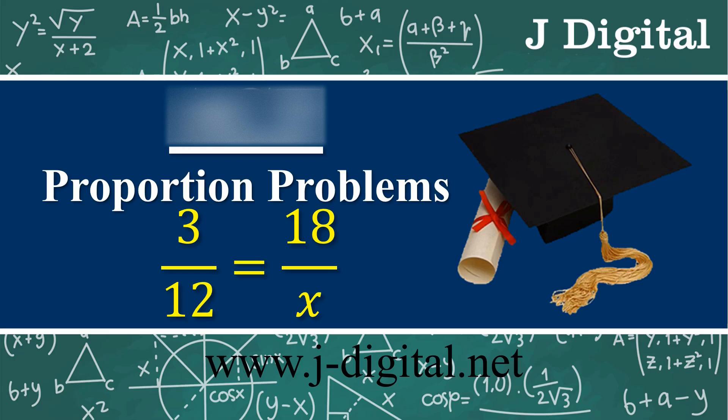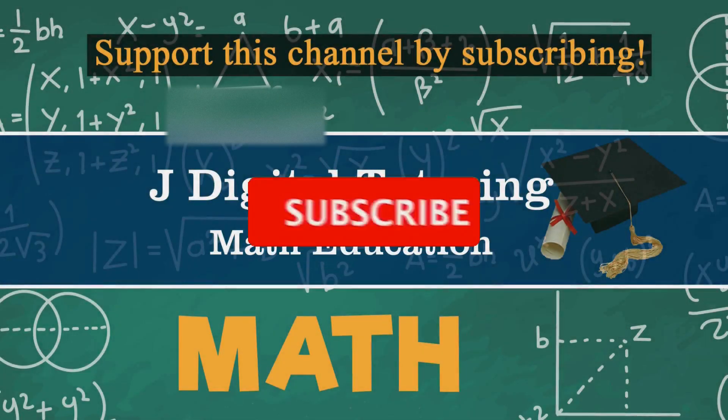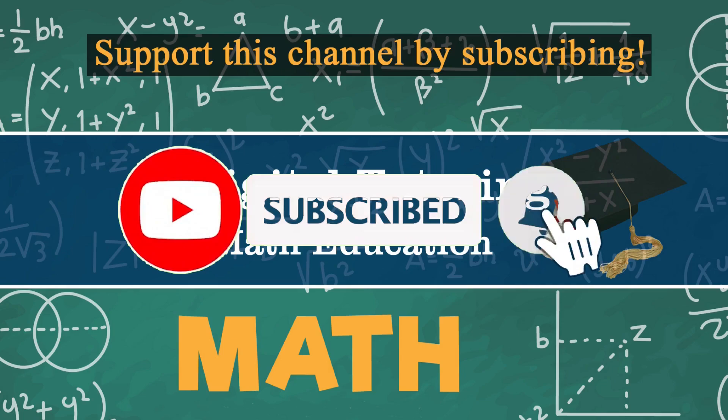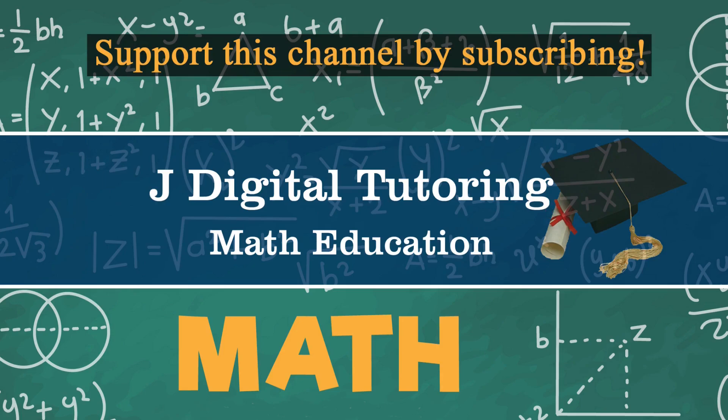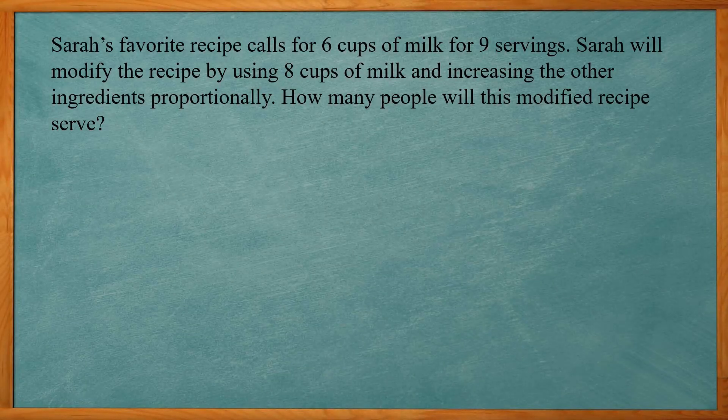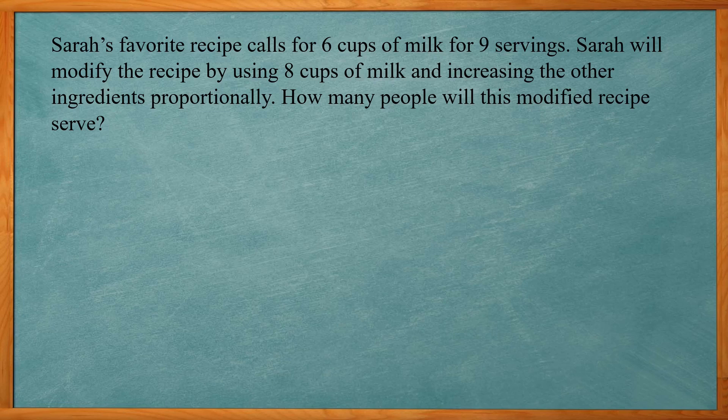In this video I will cover some ACT problems that deal with proportions. Sarah's favorite recipe calls for 6 cups of milk for 9 servings. Sarah will modify the recipe by using 8 cups of milk and increasing the other ingredients proportionally. How many people will this modified recipe serve?